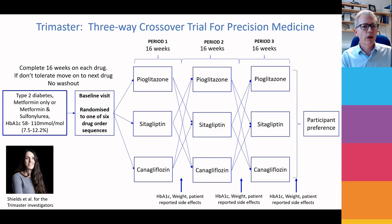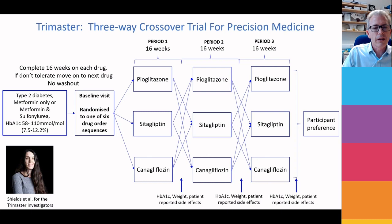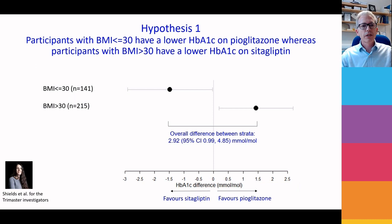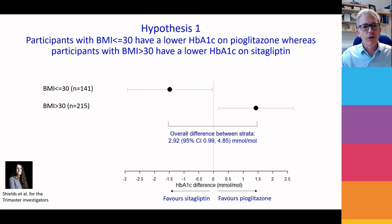So we have done a trial called the Trimaster trial, which is not published yet. This was a trial specifically set up for precision medicine — not a parallel arm RCT where you don't have the power to look at subgroup effects. In the crossover design, we give people four months of pioglitazone, sitagliptin, and canagliflozin in a random order, look at how people respond, and ask patients which drugs they liked. Does BMI matter for response to TZDs and sitagliptin? If your BMI is under 30, you respond better to sitagliptin; if it's over 30, you respond better to pioglitazone — a difference of about 3 millimoles per mole.